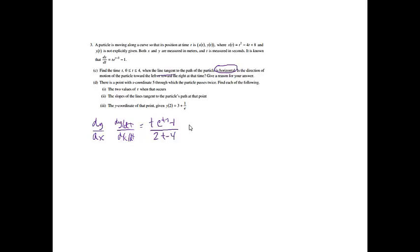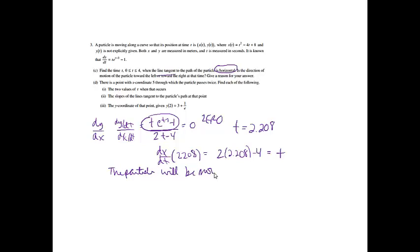We want to know when the path is horizontal. When the line is horizontal, the slope equals 0. To do that, we set the numerator equal to 0. I could plug that into my calculator and use the zero feature. If I do that, we should get t equals 2.208. Then it asks if the direction of the particle is toward the left or right at that time. If I'm talking about left or right, I'm talking about dx/dt. So I need to find dx/dt at 2.208, which is 2 times 2.208 minus 4. That is a positive value, so the particle will be moving to the right because dx/dt is positive.